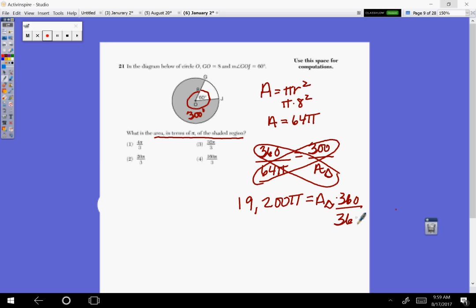So now divide by 360, or divide the whole side, cancel out. So 19,200 divided by 360 is 53.33 repeating.